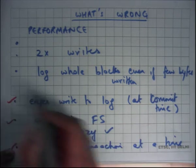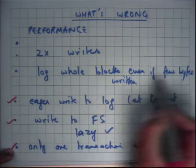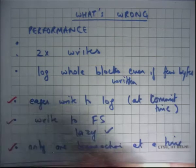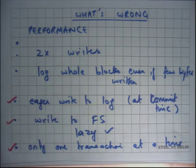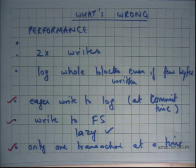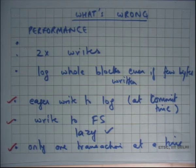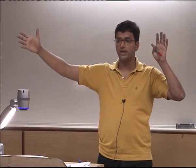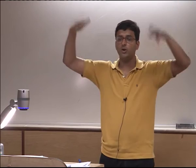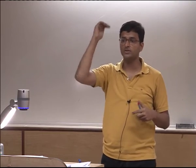In EXT3, whole blocks are still logged even if few bytes are written, but because many operations are batched into one transaction, if a block was modified a thousand times in a 30-second interval, only the last value needs to be logged to disk. Write to file system is lazy. With large transactions, many IOs can be in flight simultaneously, giving much better disk bandwidth utilization. Essentially, the larger the transaction, the less the 2x write overhead matters.